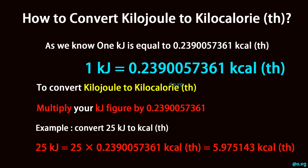Example: convert 25 kilocalorie to kilojoule. 25 kilocalorie equals 25 divided by 0.2390057361 kilojoule, which equals 104.6 kilojoule.